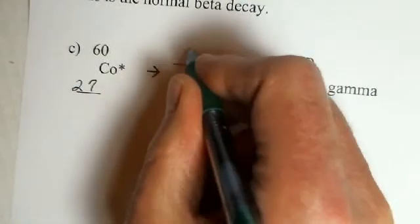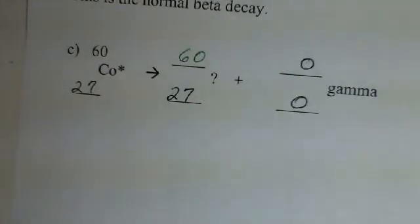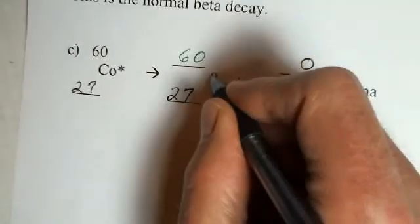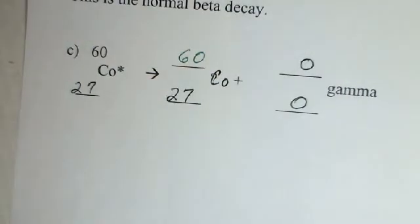We have 60 nucleons on the left, we have 60 on the right. And we know what this element is. If it has 27 protons, it's cobalt. So that's the method of filling in nuclear reactions for the count of the charge and the count of protons and neutrons.